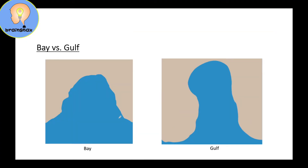Here is a bay and here is a gulf. They both go into the land, but if you look, this part of the bay is very thick and wide. Over here on the gulf, it's more thin — not as wide. This is the difference between a bay and a gulf: the thickness where the water meets the land.